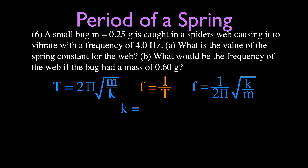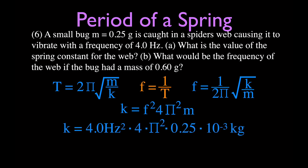Solving for k by squaring both sides and rearranging gives k equals f² times 4π² times m. Plugging in: f is 4 hertz (squared), times 4π², times 0.25 grams converted to kilograms (0.25 × 10⁻³ kg). The spring constant k is 0.16 newtons per meter — a small value, as expected for a spider's web.